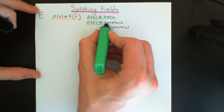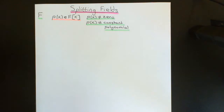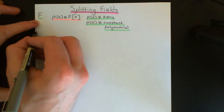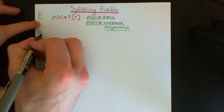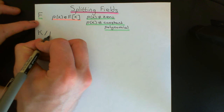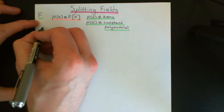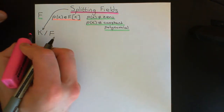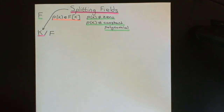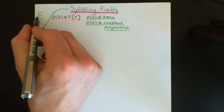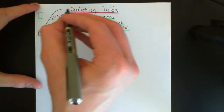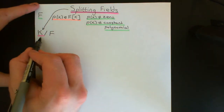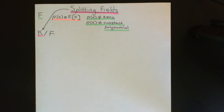So we're now ready to define what is meant by the splitting field of this polynomial P of X over the field capital F. We'll call the splitting field capital K. K is our splitting field, and its full title will be the splitting field of the polynomial P of X over the field capital F. First and foremost, it is just a field extension of capital F.